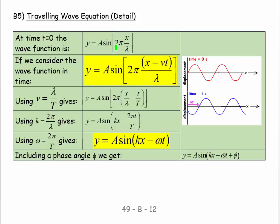So we can say that at time t equals zero, a wave function is given by y equals A, that's the amplitude, sine 2π x over λ. And that will give us a nice sine curve. If we consider the wave function in time, so as time passes this sine curve moves, we'd say A sine 2π over λ. And rather than x, we'd have x minus vt. Because it's a negative sign, it means it's moving to the right.